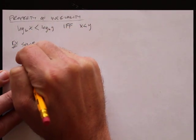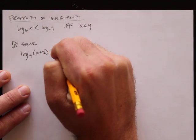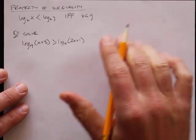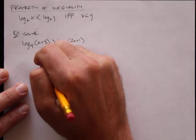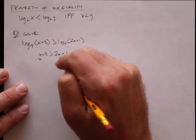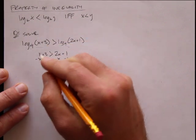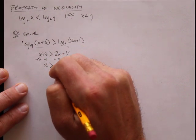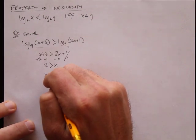Solve: log base 4 of x plus 3 is greater than log base 4 of 2x plus 1. We've got log base 4 on both sides, so we ignore those and write x plus 3 is greater than 2x plus 1. Subtract x from both sides and subtract 1 from both sides: 2 is greater than x, or x is less than 2.